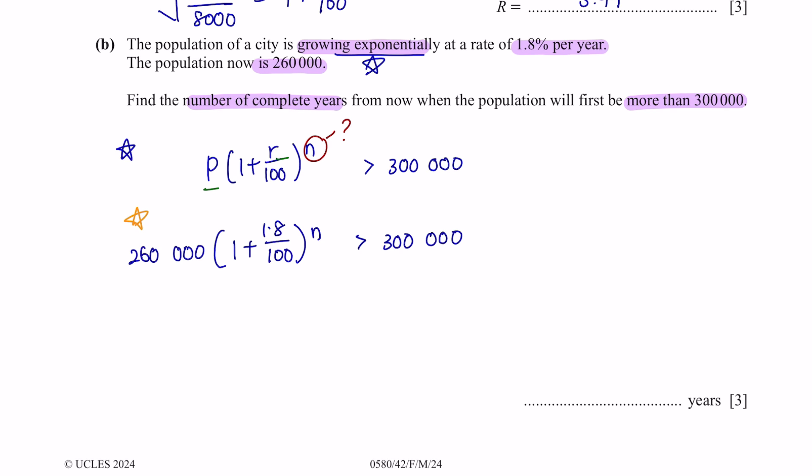To answer this question, I'm actually just going to use trial and error. If I substitute N with 1, I will get $264,680, which is less than $300,000, so N cannot be 1. If I try N equals 8, I get $299,885, which is still less than $300,000, so N cannot be 8. And if I increase N to 9, I will get $305,283, which is finally more than $300,000. So starting from year 9, the population will be more than $300,000. So N here will be 9.